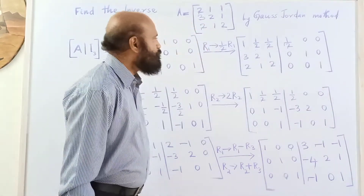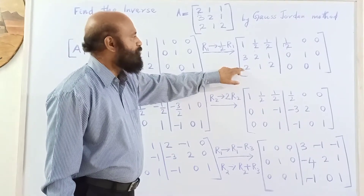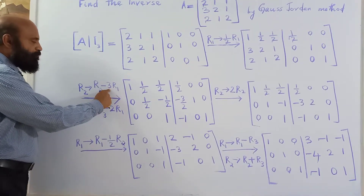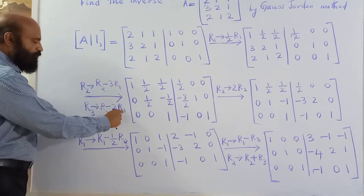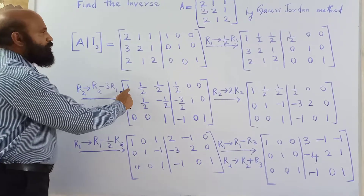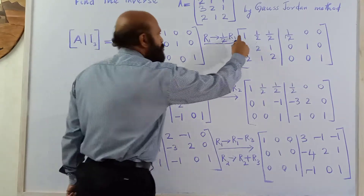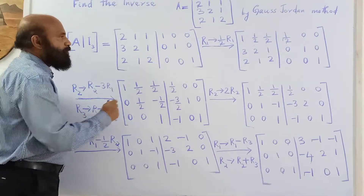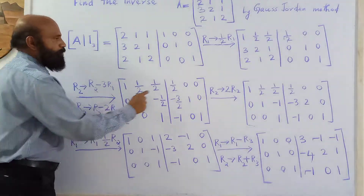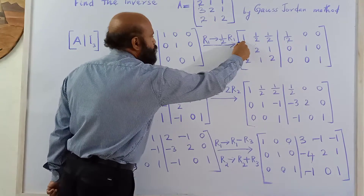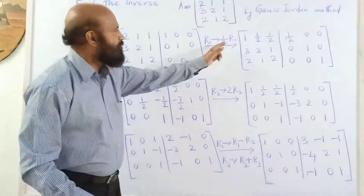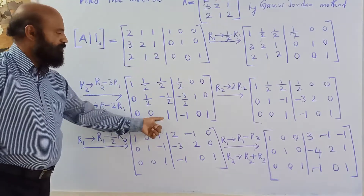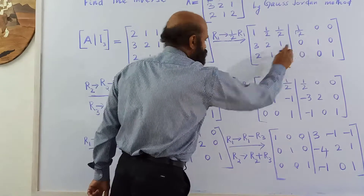Next, we need to make the elements below the (1,1) pivot equal to zero. Using the elementary transformation: subtract row 1 (multiplied by 3) from row 2, and subtract row 1 (multiplied by 2) from row 3. Row 1 stays as [1, 1/2, 1/2]. After the operation on row 2, the first element becomes 0 and the row becomes [0, 1/2, −1/2]. Similarly for row 3, the first element becomes 0. Apply the same transformations to the identity side.